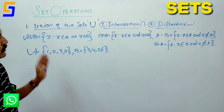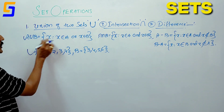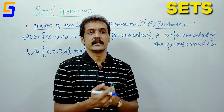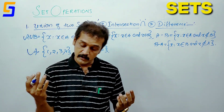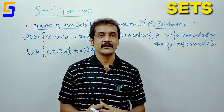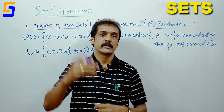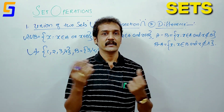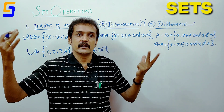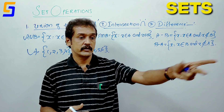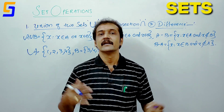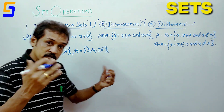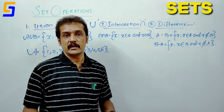So, union means we can join two sets together. A union B is the set of X where X is an element of A. If you are a new part, you will see it included in the set.